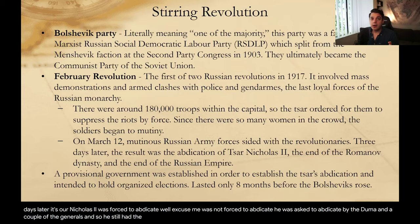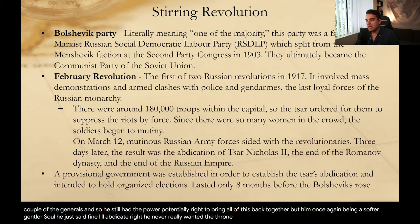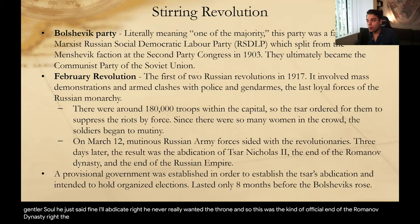He still potentially had the power to bring all of this back together. But being a softer, gentler soul, he just said fine, I'll abdicate — he never really wanted the throne. So this was the kind of official end of the Romanov dynasty. The Romanovs actually being in charge and ruling had officially ended here. A provisional government was set up, hopefully to be some type of better democratic system, potentially turning into a constitutional monarchy.